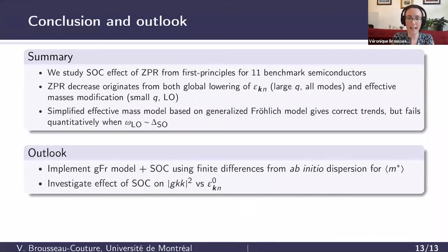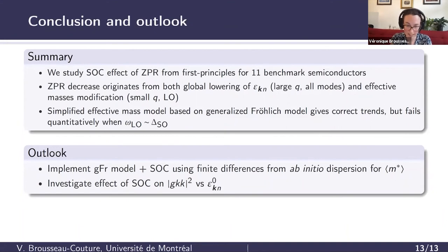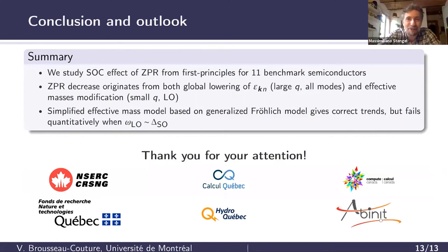Just a few words about future work. First, I would like to implement the generalized Fröhlich model with spin-orbit coupling using finite differences, but obtaining them from the full ab initio dispersion instead of the Luttinger–Kohn model. On the other hand, I would like to isolate how the ZPR is affected by spin-orbit interaction from the matrix elements and from the eigenvalues separately, to disentangle the effect from both quantities. Thank you for your attention, and I'm happy to take questions.